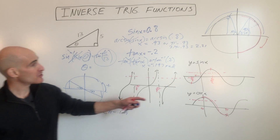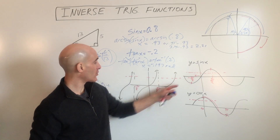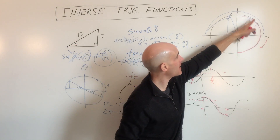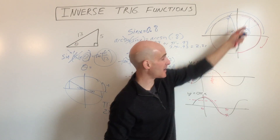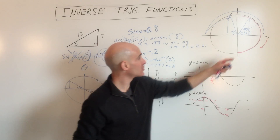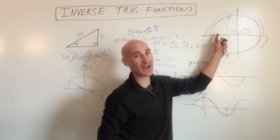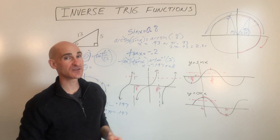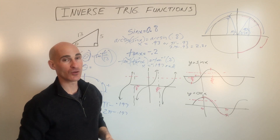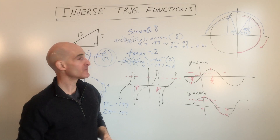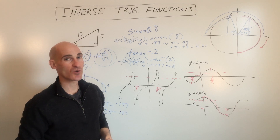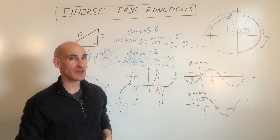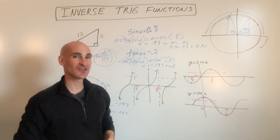Just make sure that when you're working with arc sine or arc tangent, you're going to get a solution from negative pi over 2 to positive pi over 2. For arc cosine, you'll be from zero to pi. Then analyze the unit circle to find what other quadrants that angle would occur in, and go ahead and find those solutions as well. This has been a video about how to work with inverse trig functions.